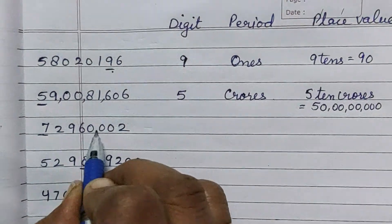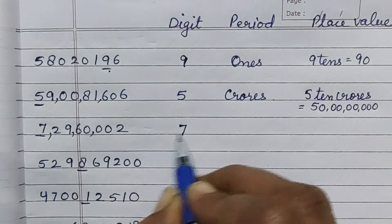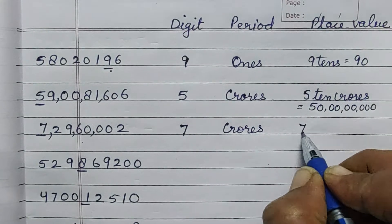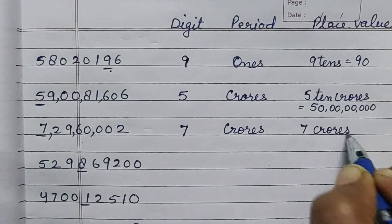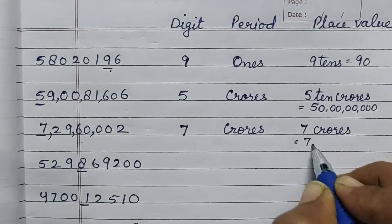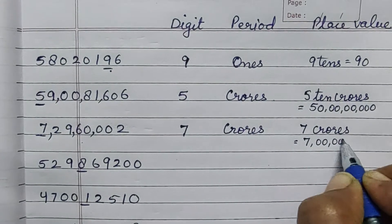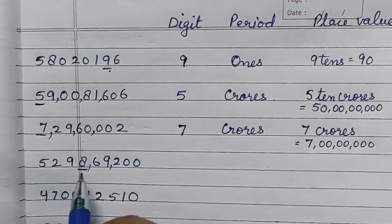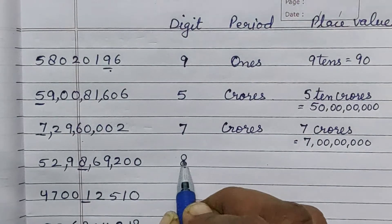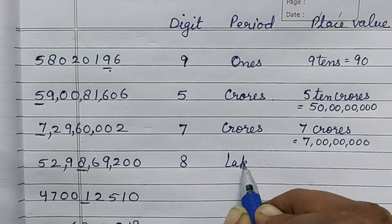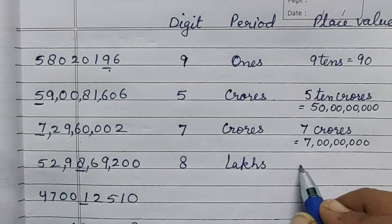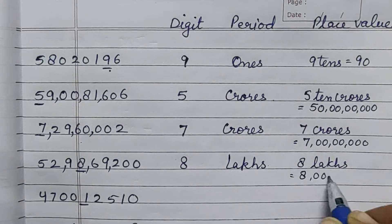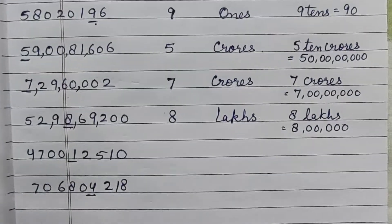The next digit is 7, it is also in the crores period, and the place value is 7 crores — that is 7,00,00,000. The next digit is 8, and it is in the lakhs period. The place value is 8 lakhs — that is 8,00,000.